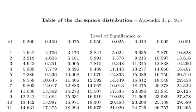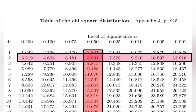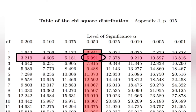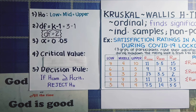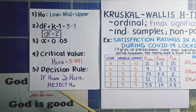Looking at the chi-square critical value table, with an alpha level of 0.05 and degrees of freedom of 2, by intersecting these values, we find that our critical value H-crit is 5.991. For our decision rule: if the computed H is greater than or equal to the critical value of 5.991, we reject our null hypothesis. Now let's proceed to the computation of the H value.